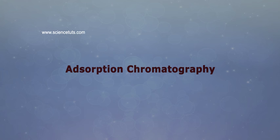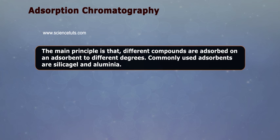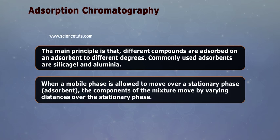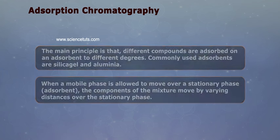Adsorption Chromatography: The main principle is that different compounds are adsorbed on an adsorbent to different degrees. Commonly used adsorbents are silica gel and alumina. When a mobile phase is allowed to move over a stationary phase adsorbent, the components of the mixture move by varying distances over the stationary phase.